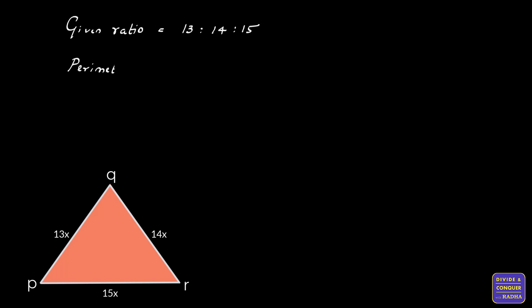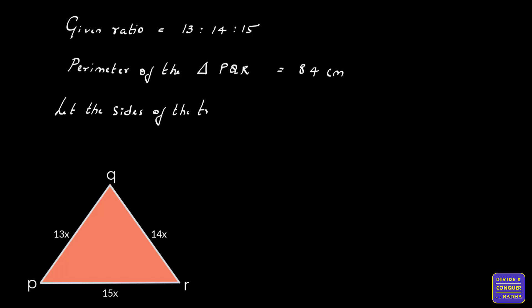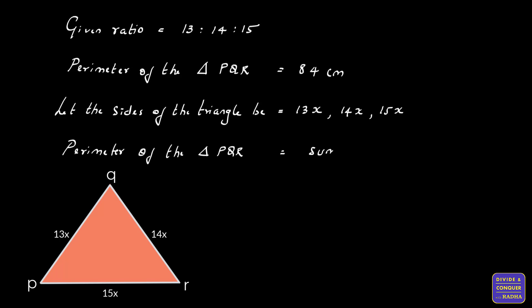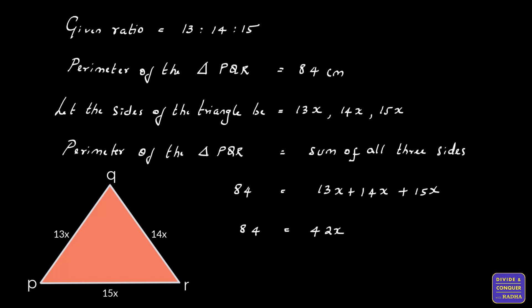The perimeter of the triangle is given as 84 centimeters. Let's consider the sides of the triangle to be 13x, 14x, and 15x. We need to equate the sides to the perimeter and calculate the value of x. Since perimeter is the sum of all three sides: 84 = 13x + 14x + 15x, which gives 42x = 84.